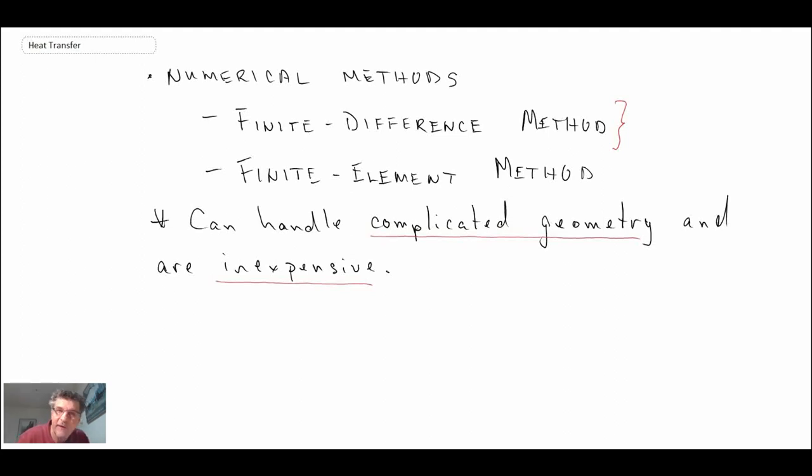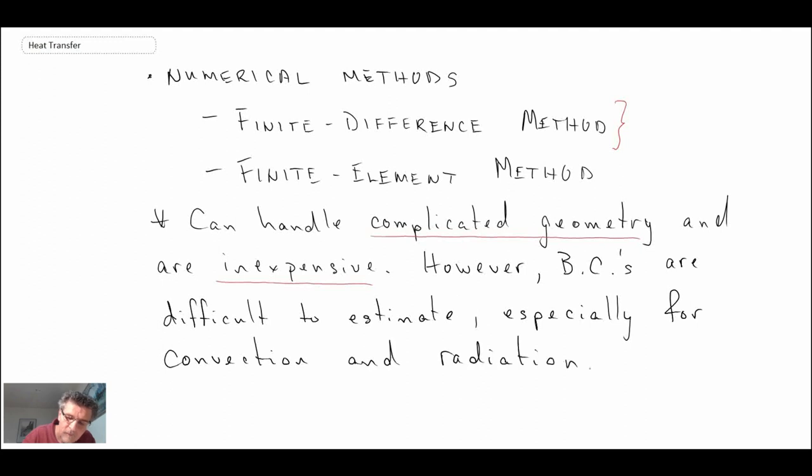There is a bit of a catch or downside. The boundary conditions are sometimes difficult to estimate, especially if you have a convective boundary condition, either free or forced convection, which we'll be looking at later on in the course, or with radiation.